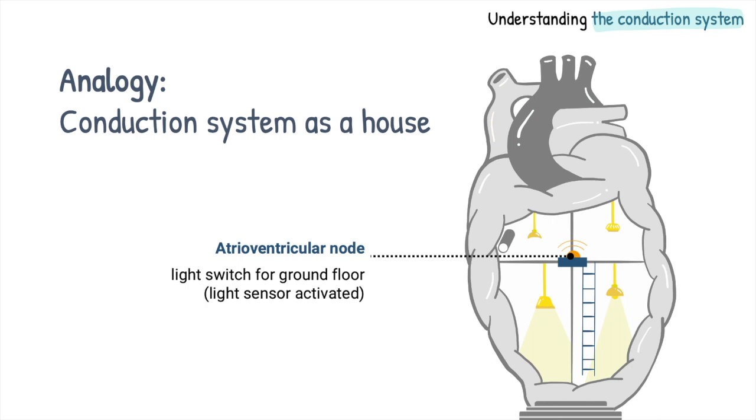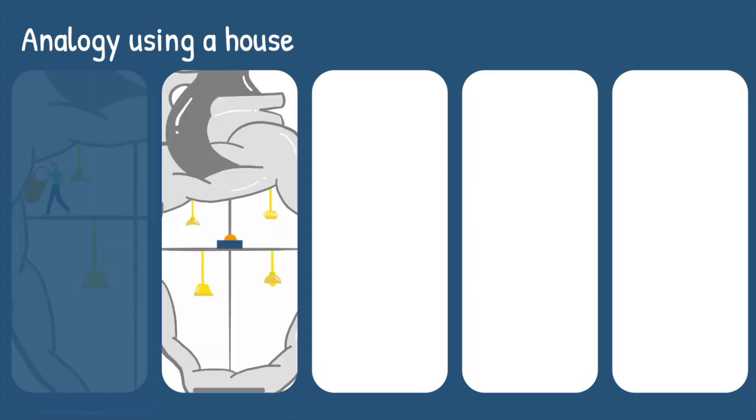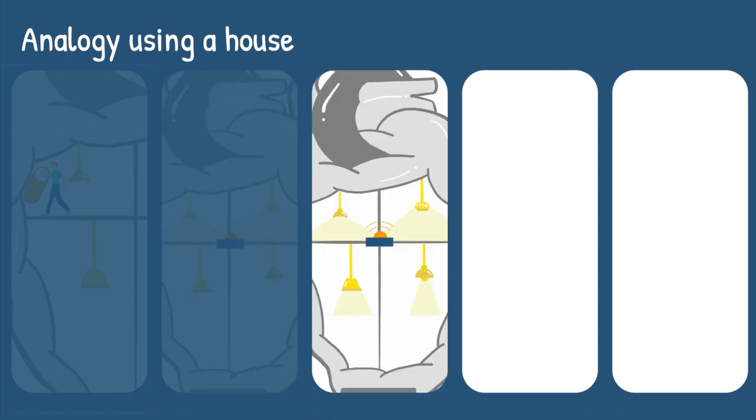In a normal heart, the lights are controlled by Alfred operating the switch on the top floor. When he flicks the switch, the lights on the top floor come on. This light will be detected by the light sensor switch between the two floors, which will trigger the switching on of the lights on the ground floor.